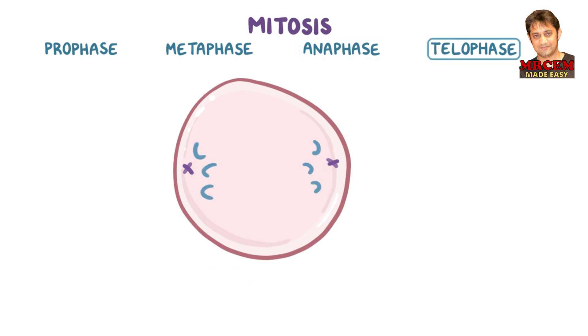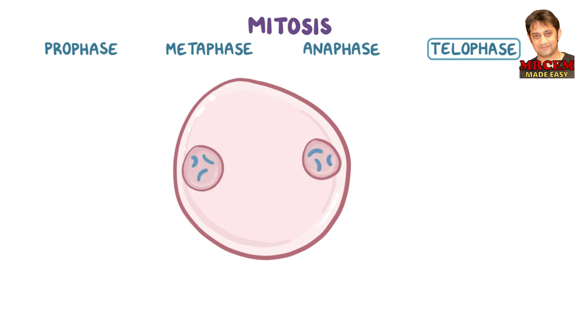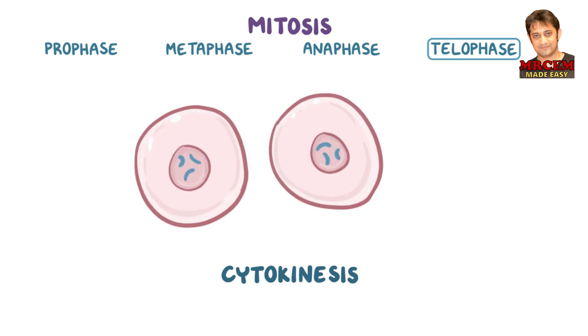Finally, there's telophase, during which a nuclear membrane forms around each new set of 46 single chromatid chromosomes. After that, during cytokinesis, the cell membrane pinches in until the two daughter cells separate.